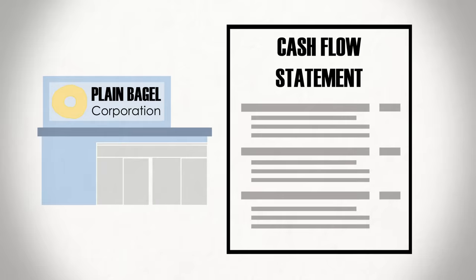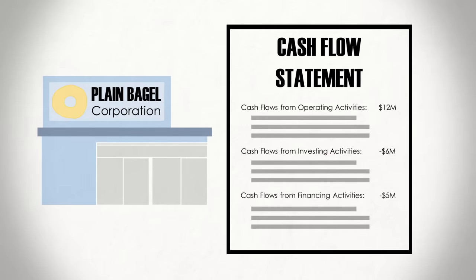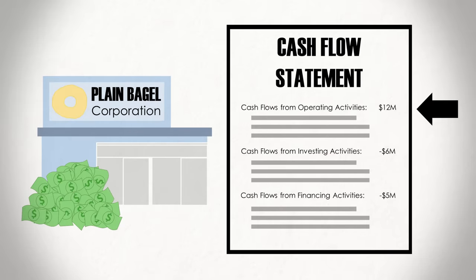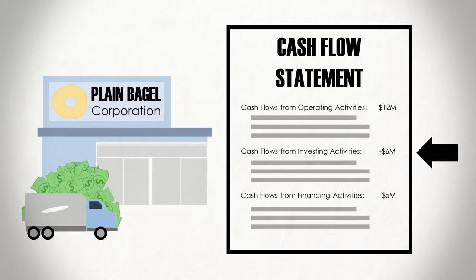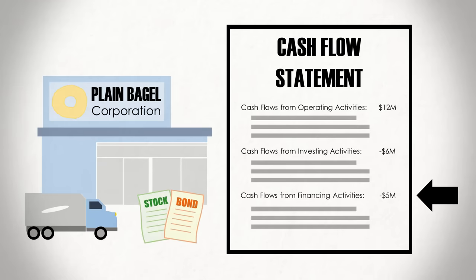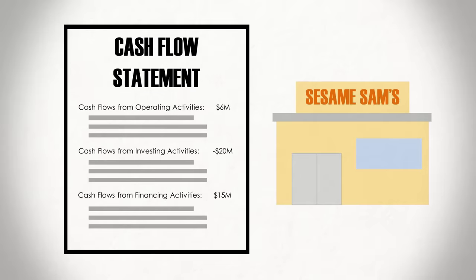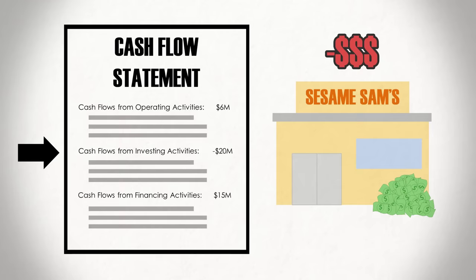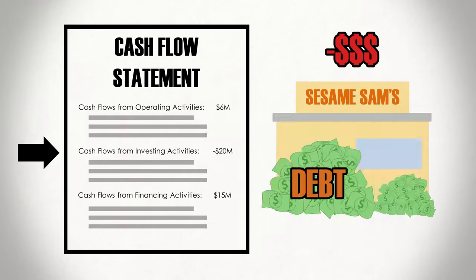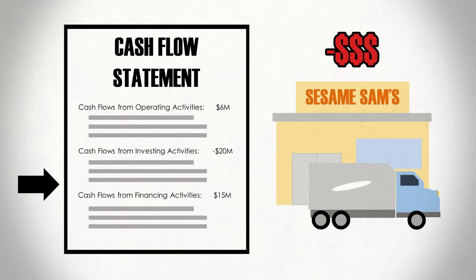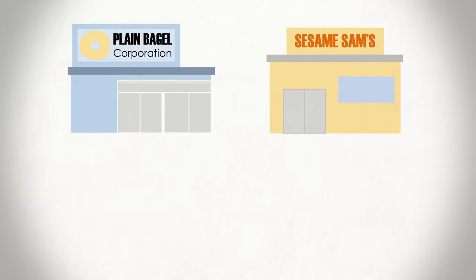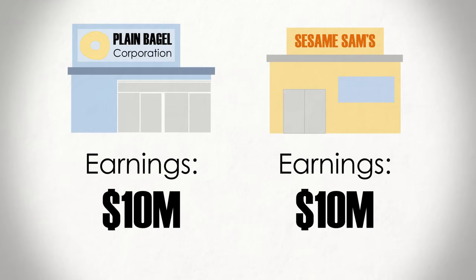But even with these similarities, the two can vary drastically, which we can see by looking at their cash flow statements. For example, on Plain Bagel Co.'s cash flow statement, you can see that the firm has a high CFO that is able to fund its CFI and actually returns money to its shareholders and creditors in its CFF. On the other hand, Sesame Sam's has a lower CFO and a steep CFI. So they're spending a lot more money than they're making from their operations, and they are taking out debt to finance the spending, which is shown in their CFF. So even though the companies have the same earnings number, Plain Bagel Co. appears to be in a stronger financial situation.